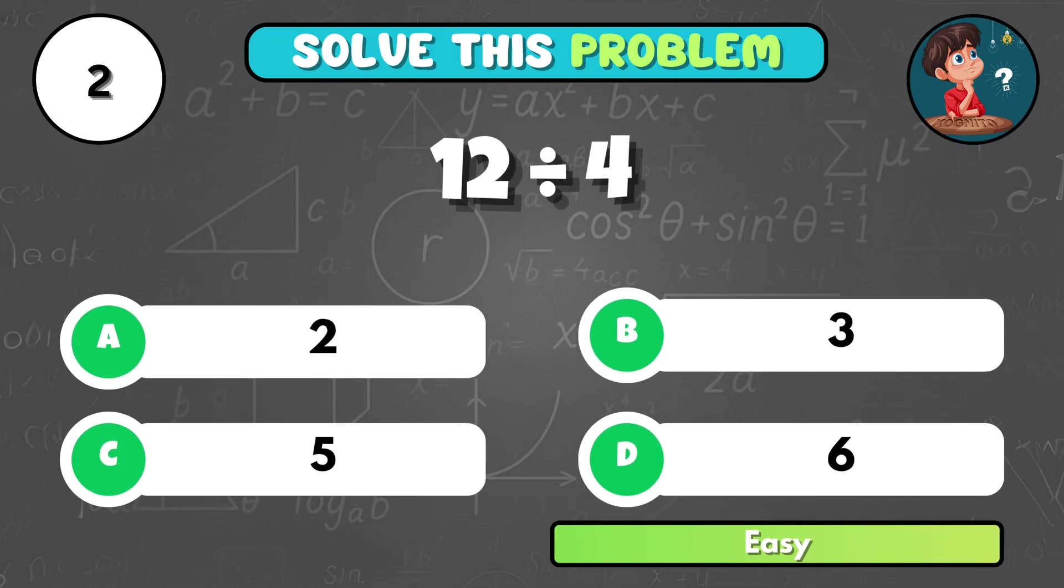Can you work out 12 divided by 4? It equals B, 3.